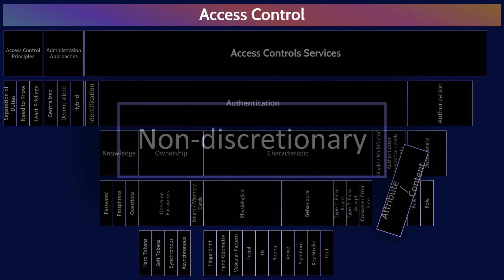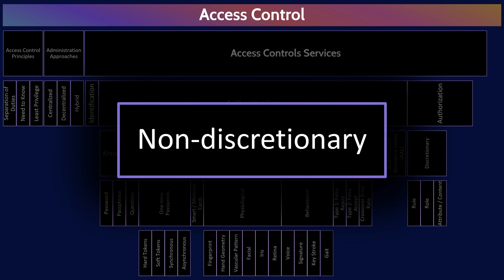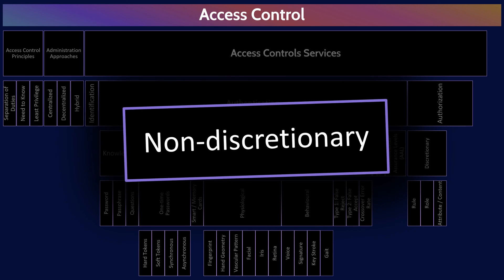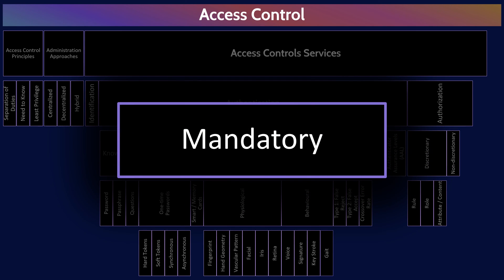The next access control philosophy is non-discretionary. Discretionary meant the owner decides, so non-discretionary means someone other than the owner decides who is authorized to access what — like an IT help desk person. This is not a good security practice. The last access control philosophy is mandatory access, where the system decides based on the security clearance of the users and the classification of assets. Labeling is an important requirement for mandatory access.